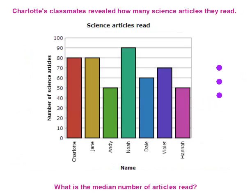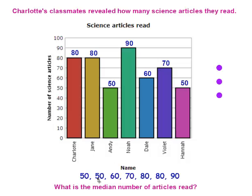Charlotte's classmates revealed how many science articles they read. What is the median number of articles read? Again, the first thing I would do is write the values at the top of each one of these bars. To find the median you take the numbers and you put them in order from least to greatest. Then you find the number in the middle. In this case there's only one number in the middle and that's 70. The median of this set of data is 70.